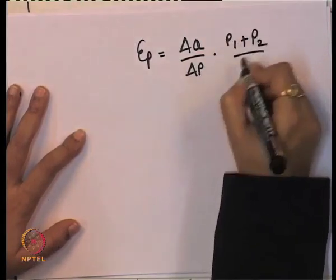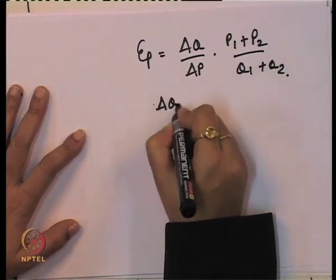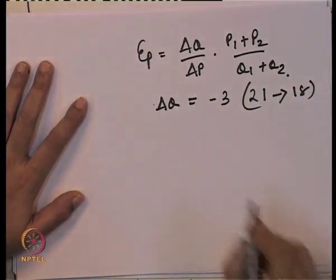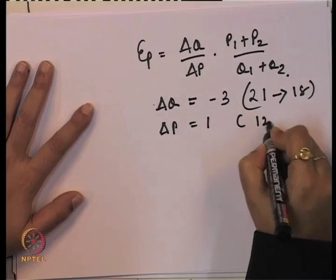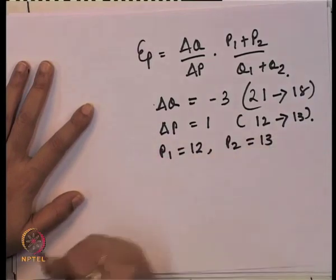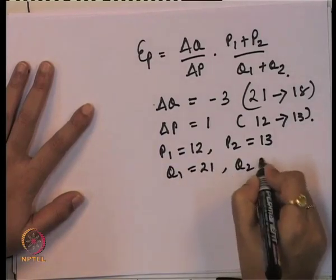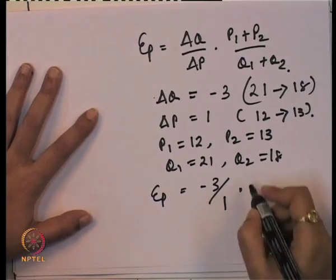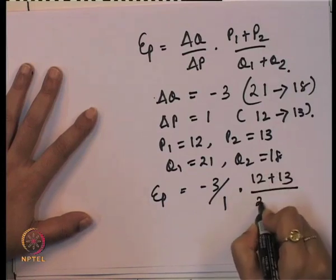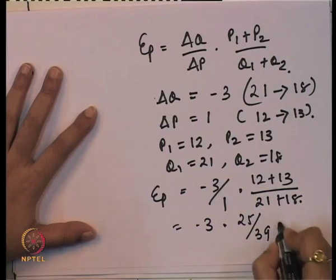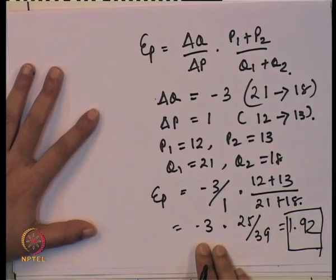The arc elasticity of demand is ΔQ/ΔP × (P1 + P2)/(Q1 + Q2). ΔQ is minus 3 (quantity decreases from 21 to 18), ΔP is 1 (price increases from 12 to 13), P1 is 12, P2 is 13, Q1 is 21, and Q2 is 18. Substituting: minus 3/1 × (12 + 13)/(21 + 18) = minus 3 × 25/39 = minus 1.92. So the elasticity of demand is approximately 1.92, which is greater than 1.